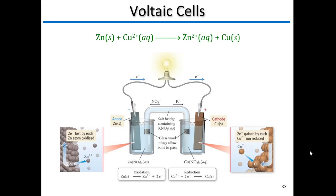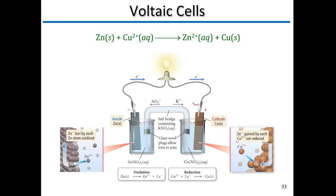The way we can take advantage of it is to connect some wires between the anode and the cathode — two plates in two solutions. We're giving electrons a path to flow. If we put some device in the middle, like a light bulb, we can use that flow of electrons to generate power. This is your basic voltaic cell — the same zinc-copper reaction, but now with something in the middle.